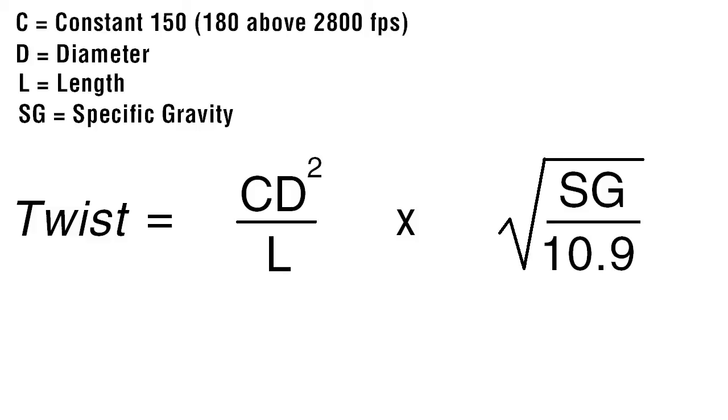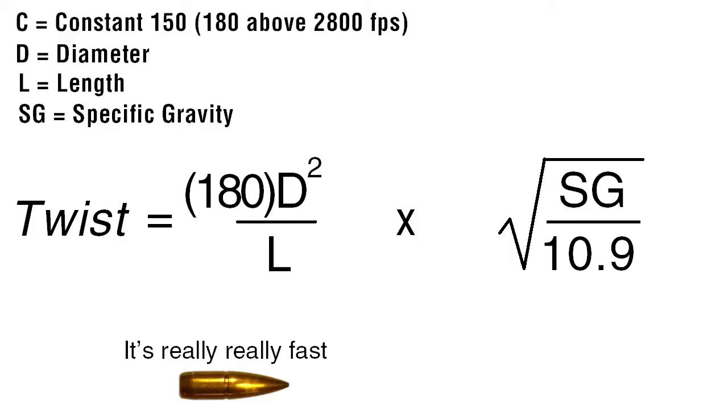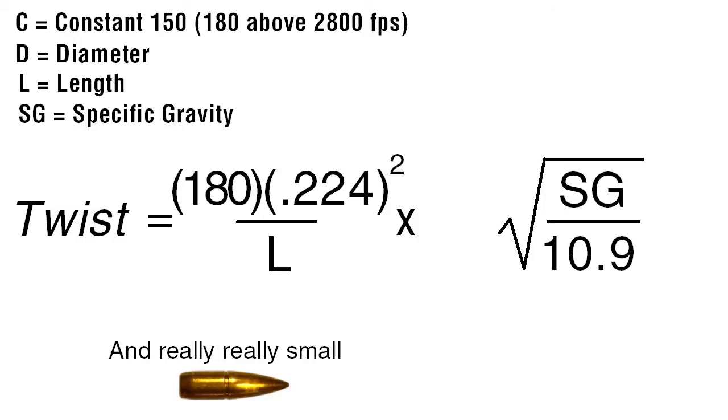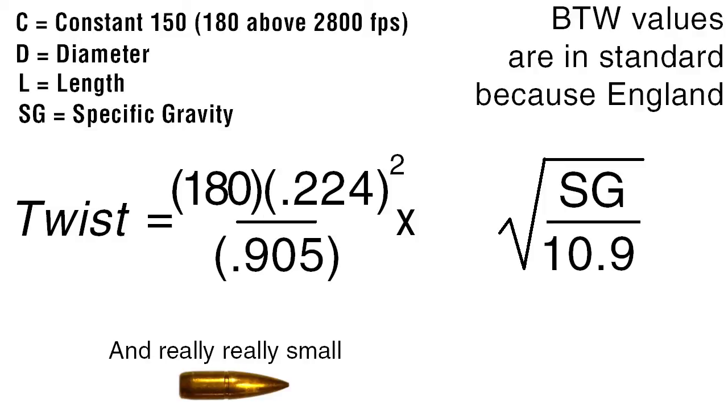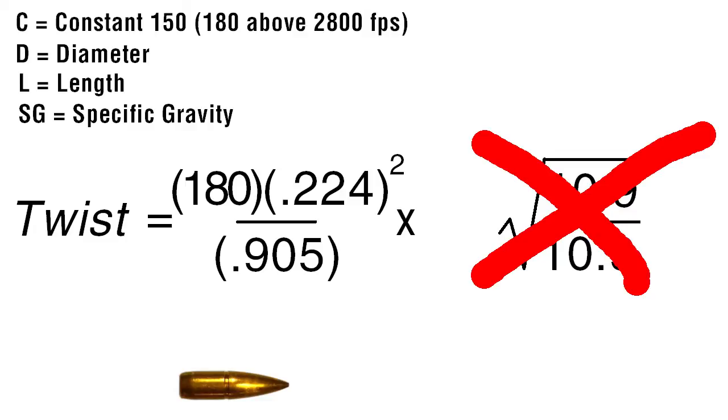Let's find out why. Take an average AR-15 223 Remington bullet for example. The muzzle velocity for a standard AR-15 is around 3000 fps, so we'll use 180 for the muzzle velocity constant. The diameter of the bullet is 0.224 inches, squared. The length of the bullet is 0.905 inches. And just to keep things simple, let's use lead core so the right side of the equation cancels out.